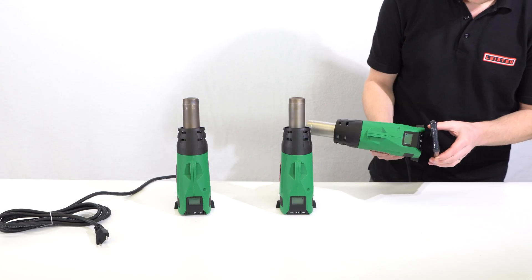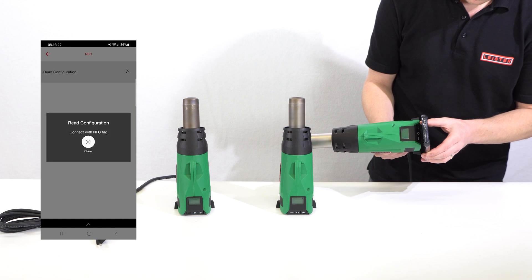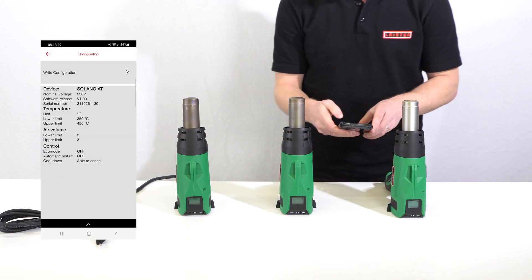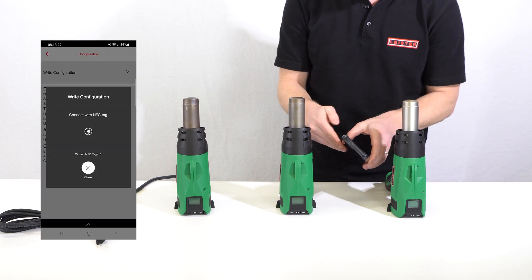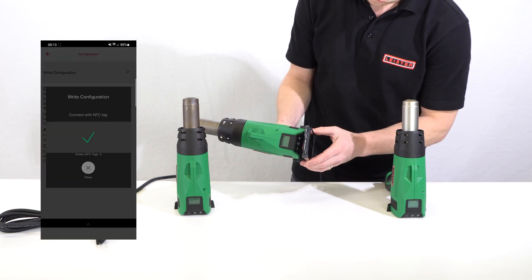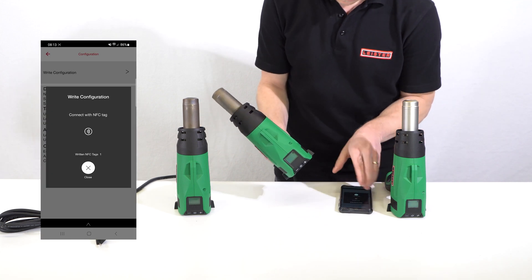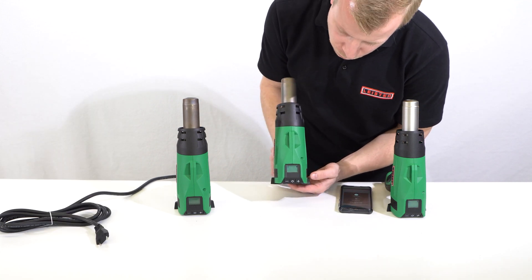Application-specific settings configured with the application protection feature can be transferred to any number of other Solano ATs using the NFC interface and the read and write function of the MyLeister app. Reproducibility can be easily achieved even in large production plants with any number of devices present.